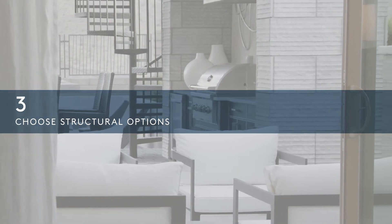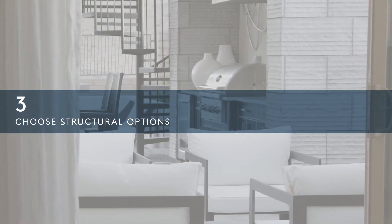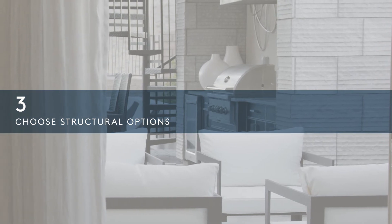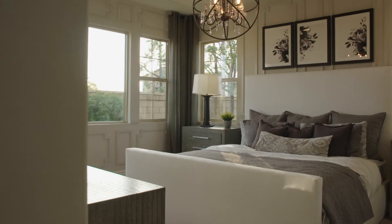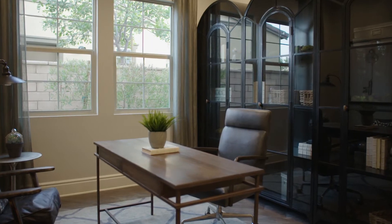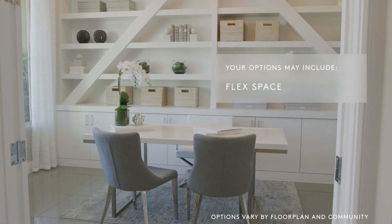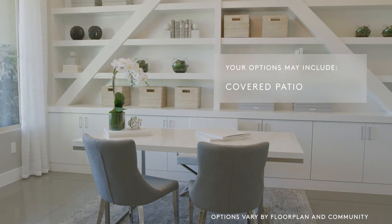Now, it's time to choose structural options to personalize the layout of your home. Will your extra room be a bedroom with a bath or an office? These options vary by floor plan and community but may include a flex space, a covered patio, and home exterior. Work with your sales consultant to finalize structural options and also explore which exterior options are available to create instant curb appeal for your new home.